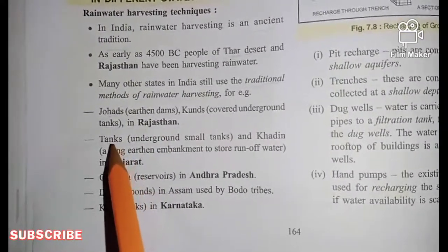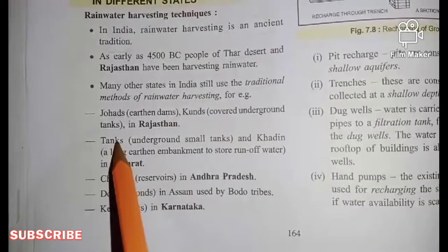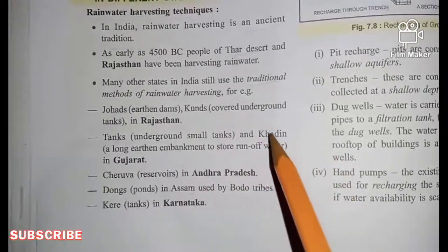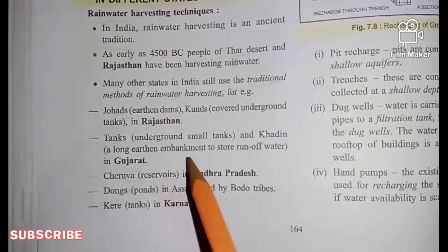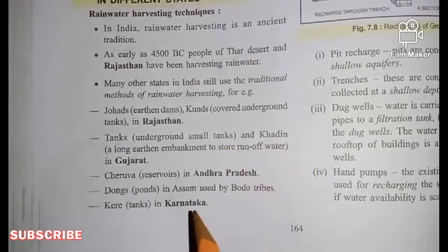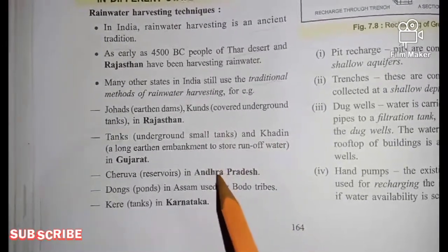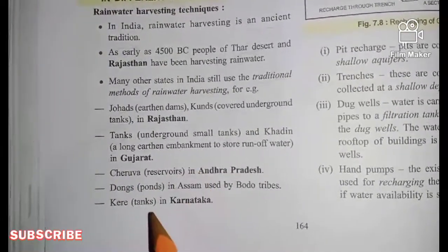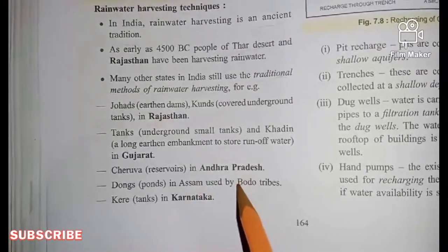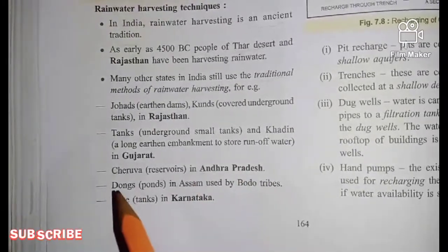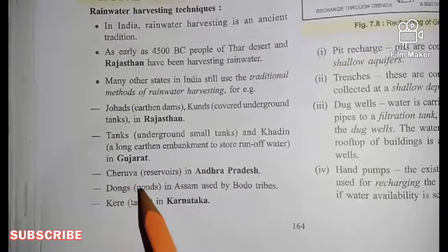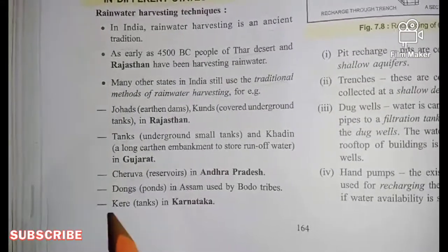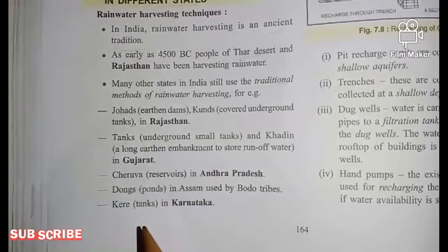In Gujarat, there are tanks, generally underground. There are also Khadin, which is a long earthen embankment used to store runoff water. In Andhra Pradesh the method is called Cherua, which are reservoirs. In Assam, the Bodo tribes use a method called Dongs, referred to as ponds. In Karnataka, the rainwater harvesting technique is called Kere, meaning tanks.